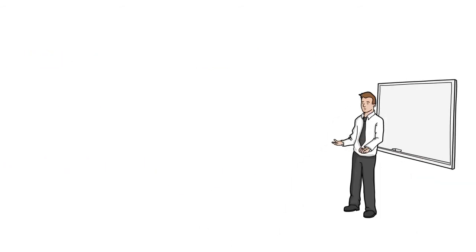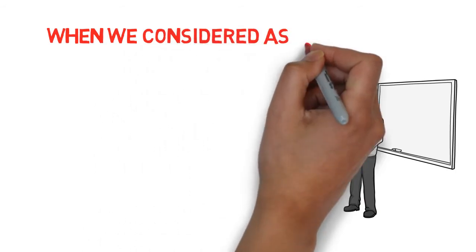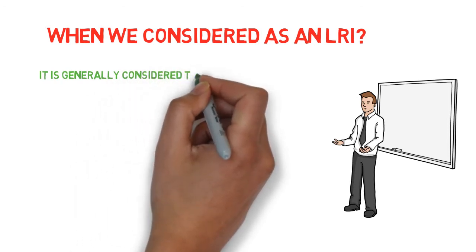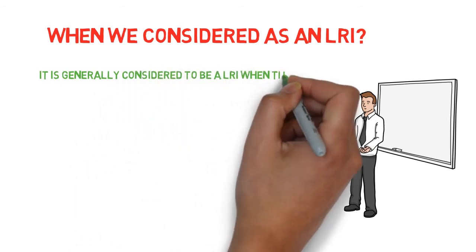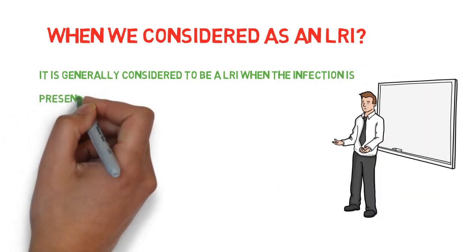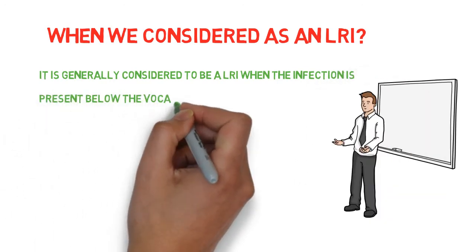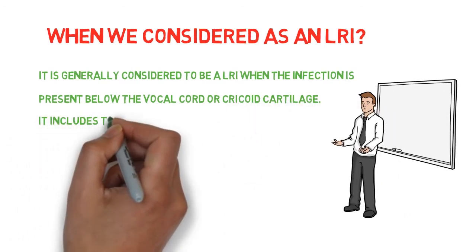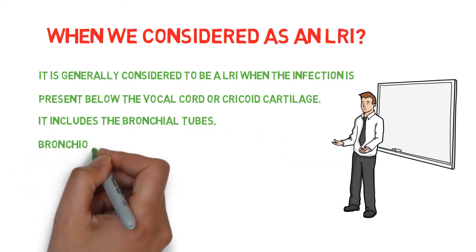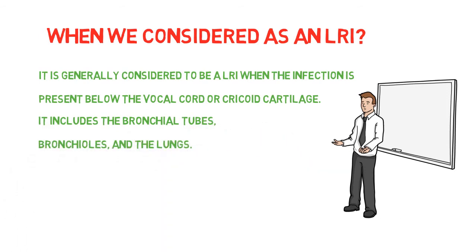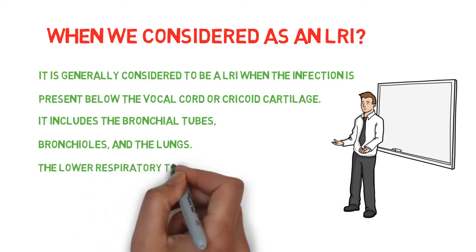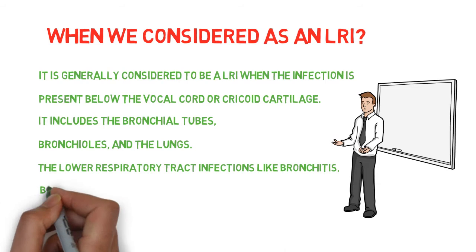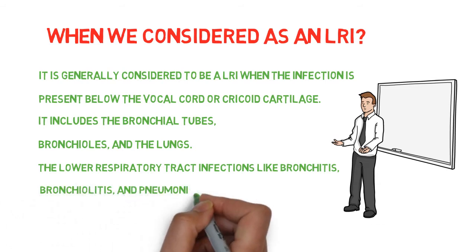When we consider as a lower respiratory infection, it is generally considered when the infection is present below the vocal cord or cricoid cartilage. It includes the bronchial tubes, bronchioles, and the lungs. The lower respiratory tract infections like bronchitis, bronchiolitis, pneumonia, etc. are commonly seen.